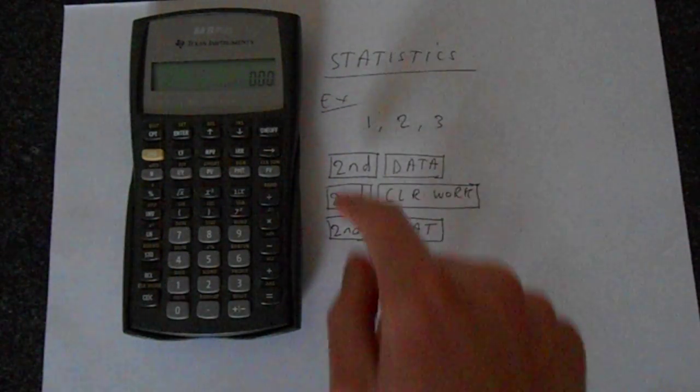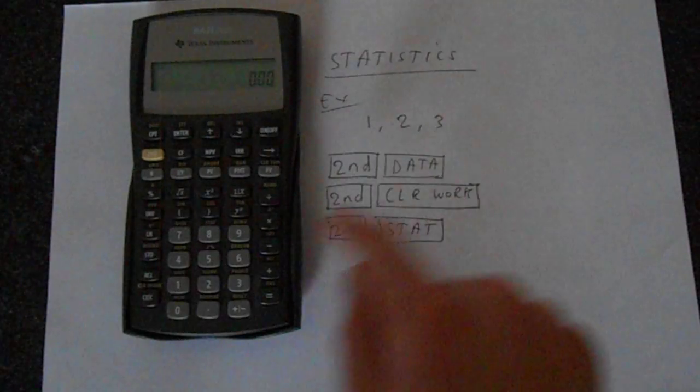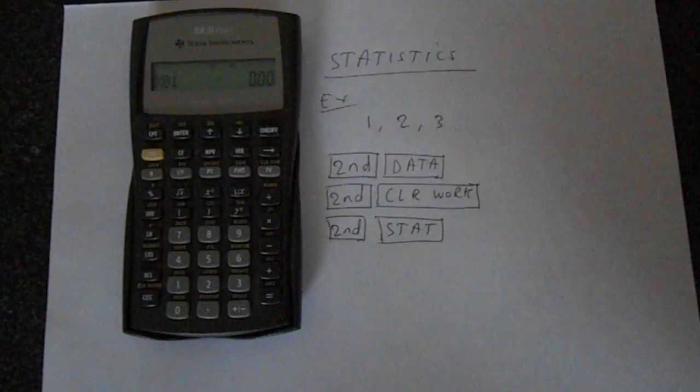So the first thing we're going to do is put in the correct mode, so we go second and then we press data which is on number 7 and that puts us into the mode that we want.